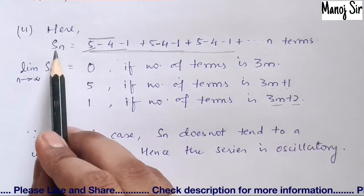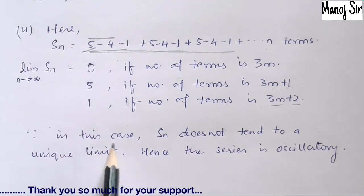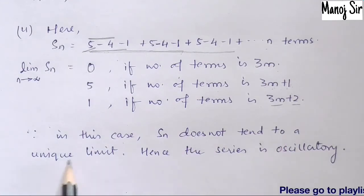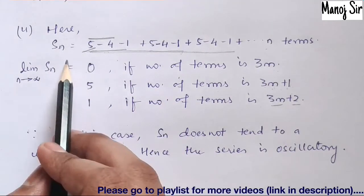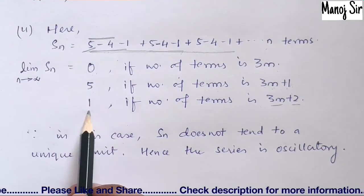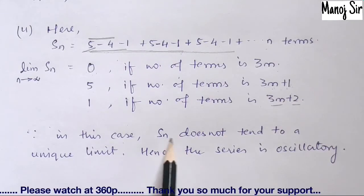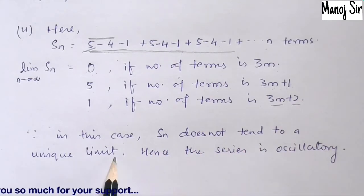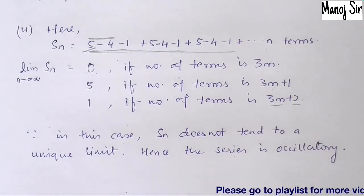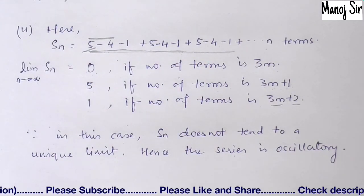So we have Sn = 0, Sn = 5, and Sn = 1 in the three cases. Since Sn does not tend to a unique limit — sometimes we get 0, sometimes 5, sometimes 1 — the series is oscillatory. Thank you so much for watching this video.